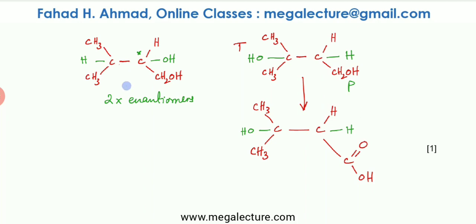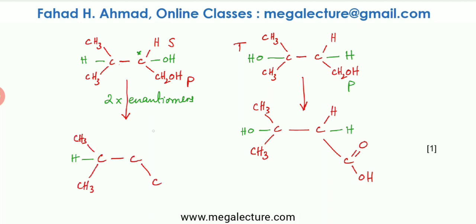Oxidizing the second molecule: the secondary alcohol carbon — bonded to two carbon chains — changes into a ketone, and the primary alcohol changes into a carboxylic acid (double bond O and OH). So the oxidation product of the second molecule contains both a ketone and a carboxylic acid.